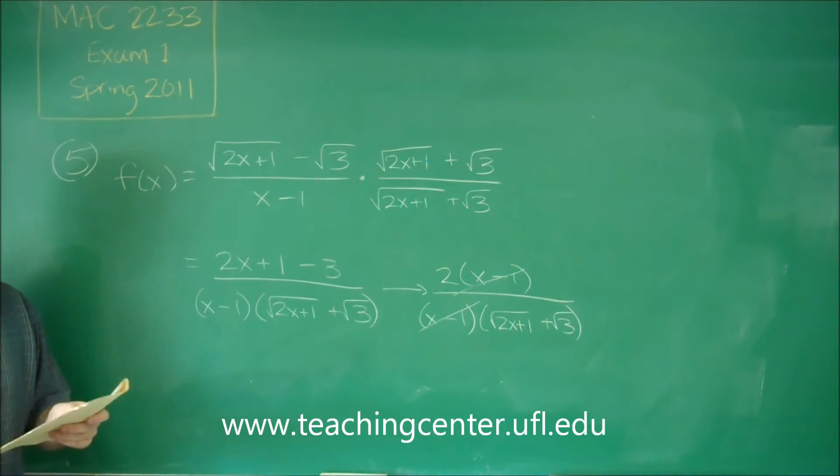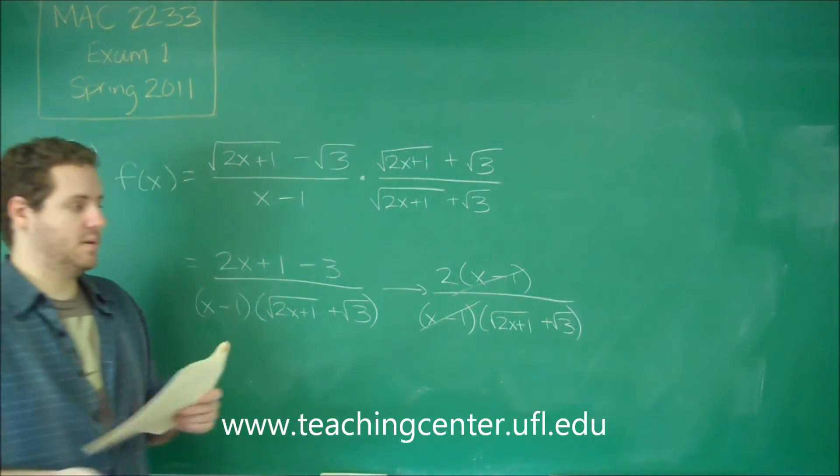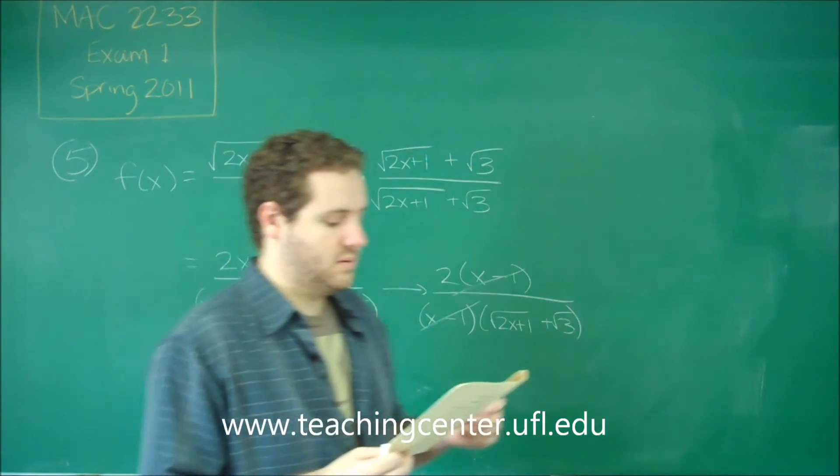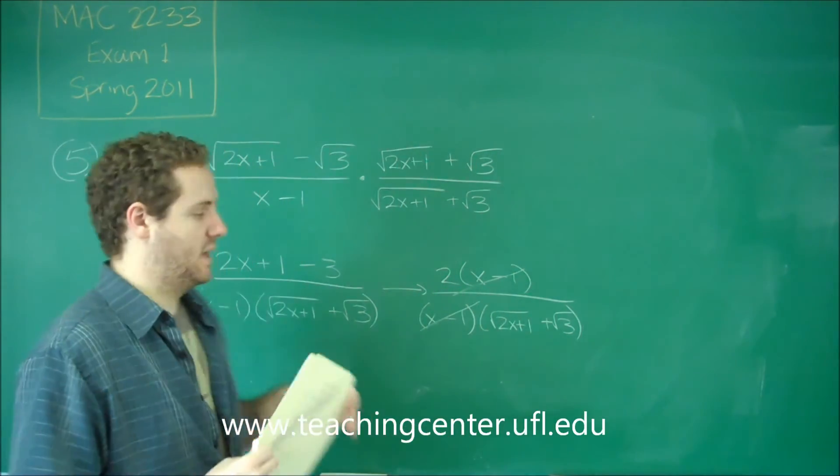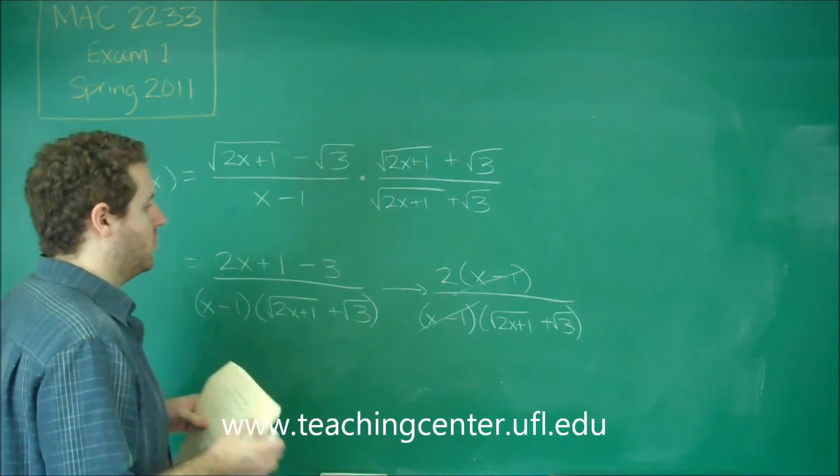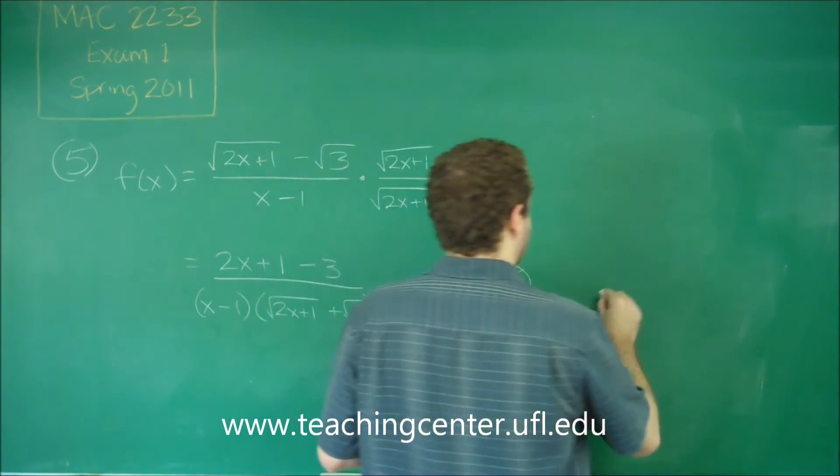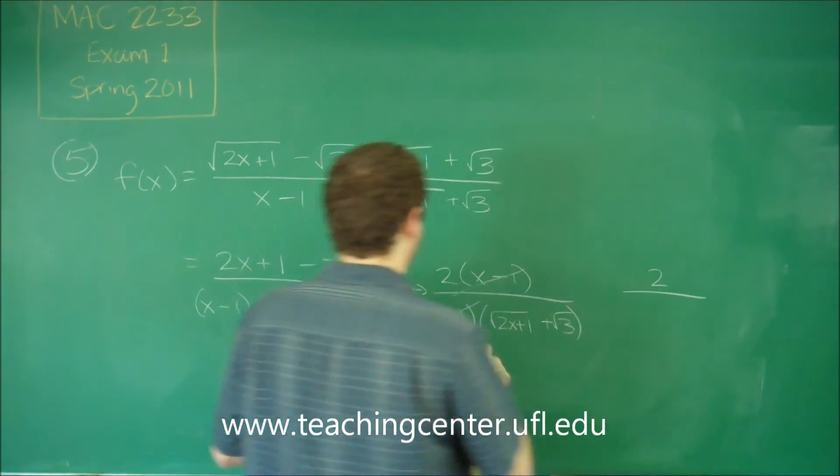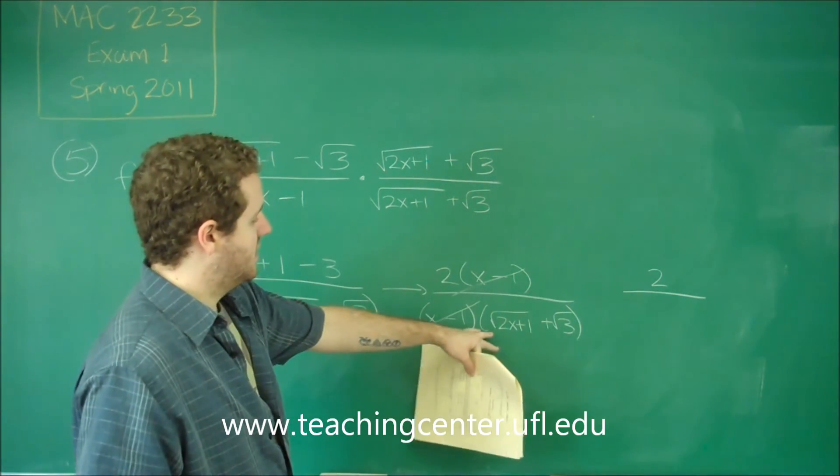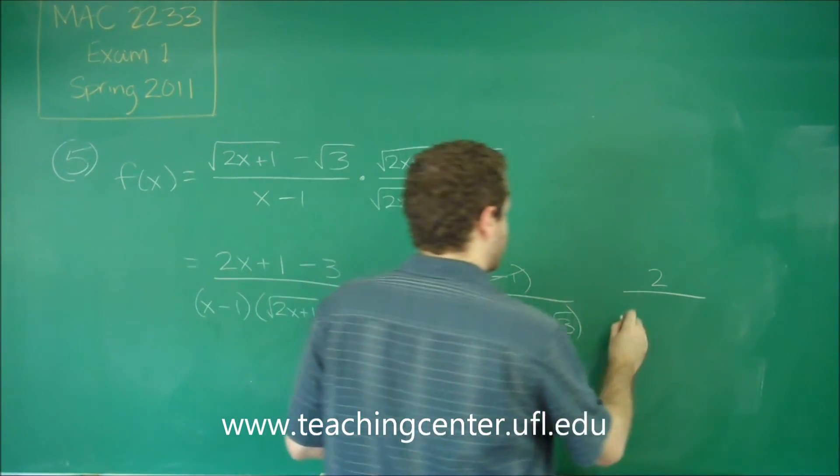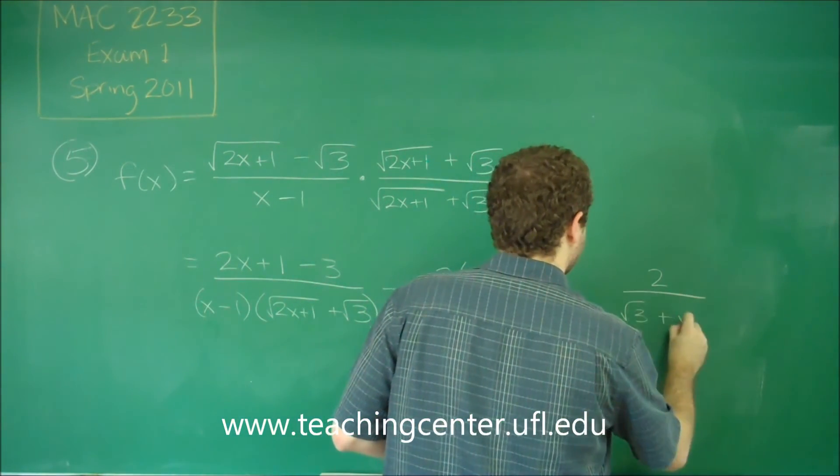Now we can try to plug in 1, our limit, and see what our x is approaching and try to find out what that limit is. So if we plug in 1 now, we're going to get 2 over root, so this is going to be root 3 plus root 3.